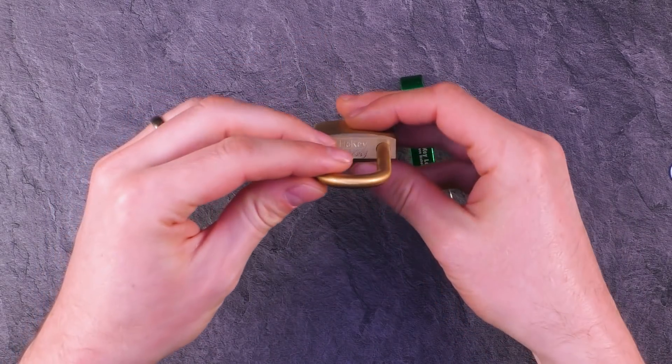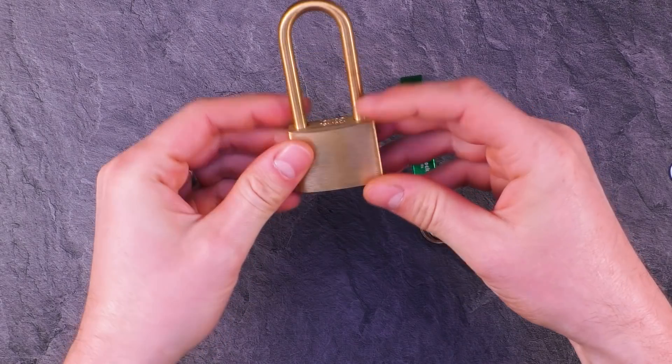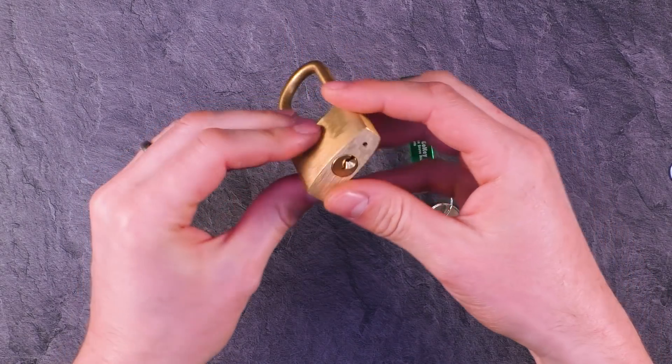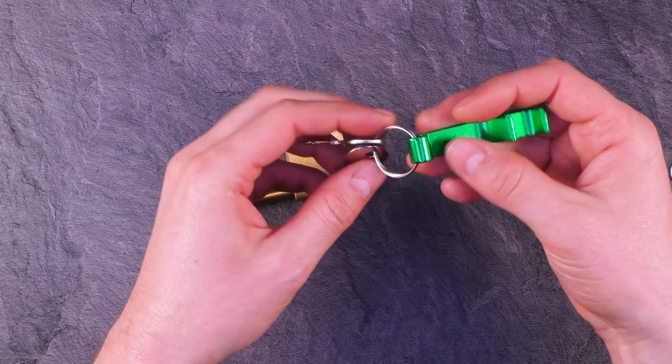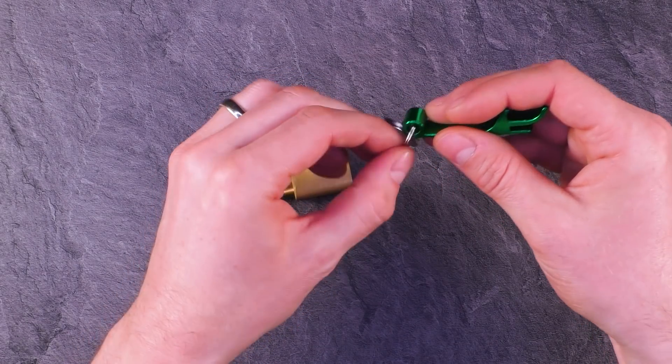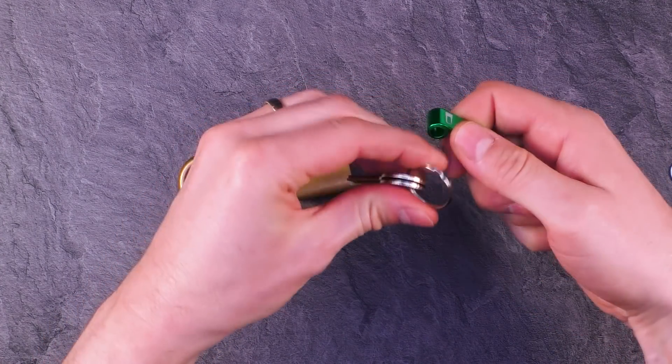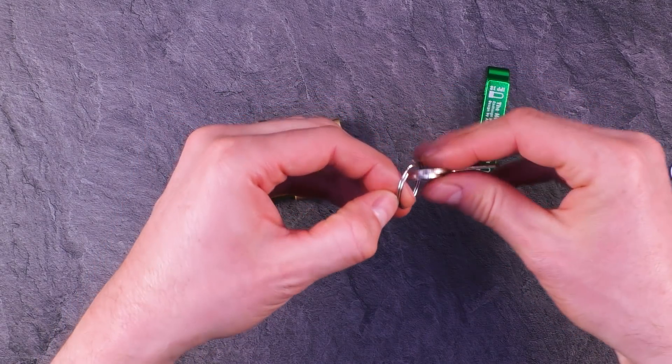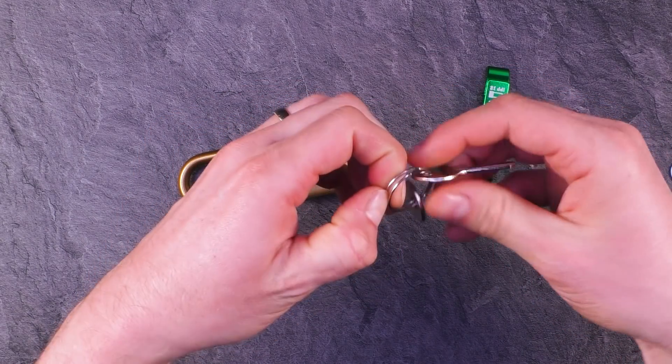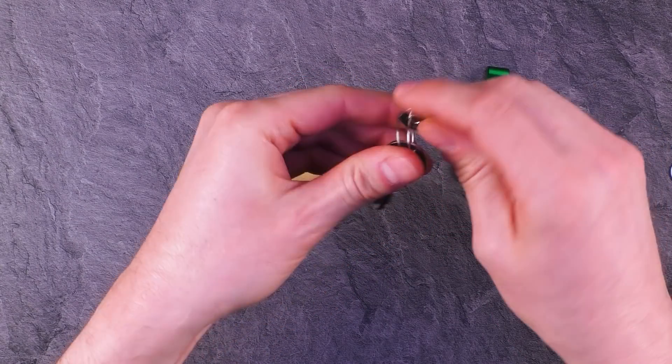During the unboxing, I already noticed that there is nothing to notice because it is completely looking like a regular lock. It comes with this bottle opener. I will just take off the two keys in case we need them separately. And of course, 100% of the people trying this lock for the first time will do the same as I will do right now.